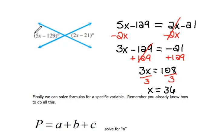Now, this is not our final answer, though. Again, this angle is not 36 degrees. This angle is 5 times x, which we found to be 36, minus 129. So we literally have to plug in our answer for the variable and find out what that measure is actually going to be.